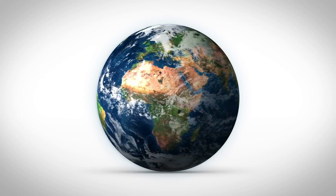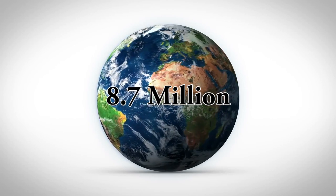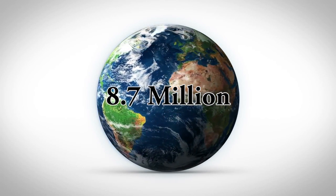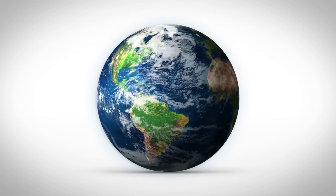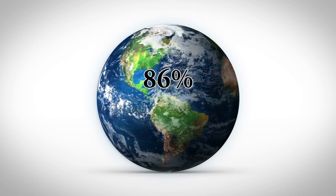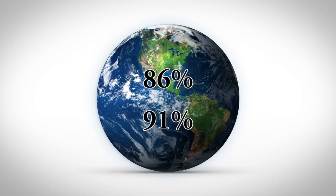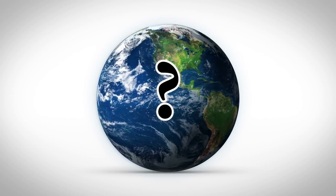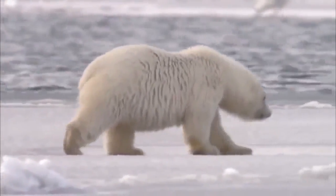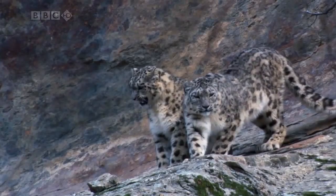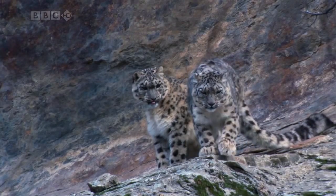We have discovered over 8.7 million different species on Earth, but even after those 8.7 million, estimations say that 86% of land species and 91% of marine species remain undiscovered. Every single one of these 8.7 million known species has its own unique scientific name.